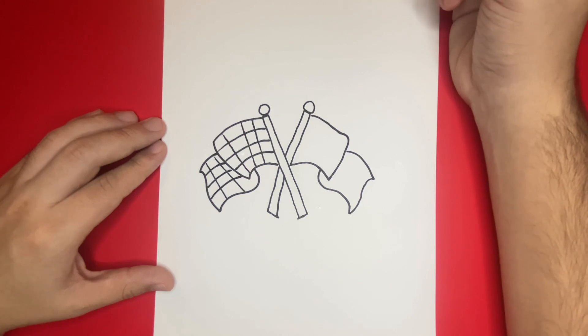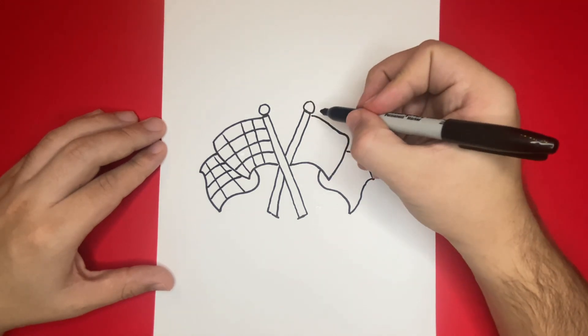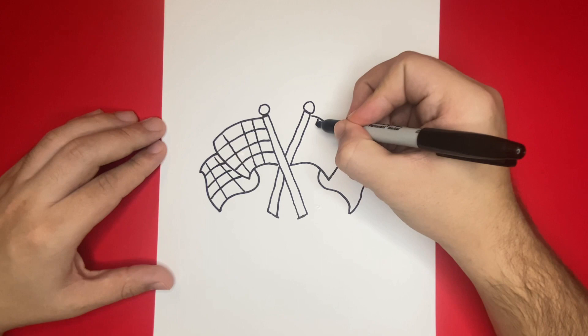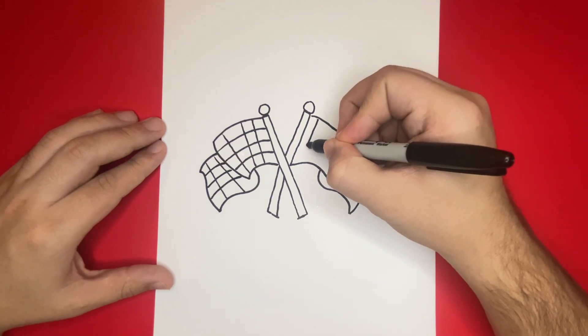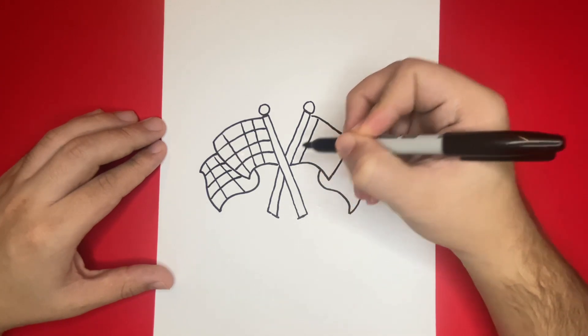Fantastic! Now, let's go ahead and draw the exact same pattern on the right flag as well. Keep in mind that we're going to want to make sure that the amount of lines are similar in the right flag as the left flag. This will help us stay symmetric.